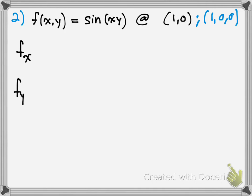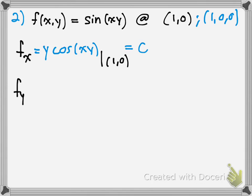The partial derivative with respect to x: treat y as a constant. The derivative of sine is cosine, and using the chain rule, y comes out, giving y cosine(xy). Evaluated at (1, 0), you get 0, because y is 0 and multiplying by 0 gives 0.